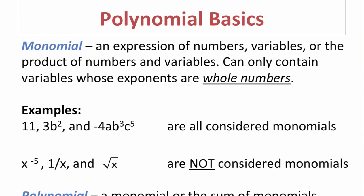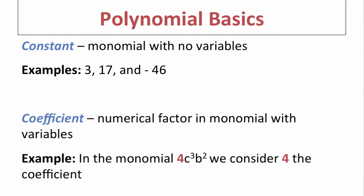At the bottom of the page, the term polynomial is a combination of monomials, or the sum of monomials — sum meaning addition. The term constant means that a monomial has no variables, so just regular numbers like 3, 17, or negative 46 are all considered constants.